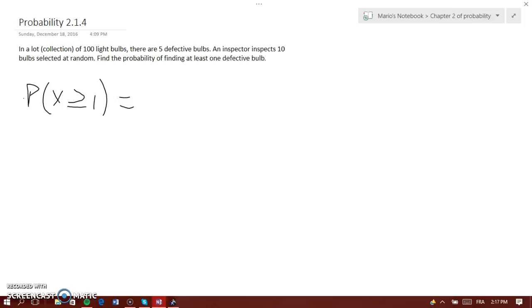Instead of doing all that, we can just find the probability that there are no defective bulbs. So when we're looking for X is at least greater than 1, it would be 1 minus the probability that there are no defective bulbs.